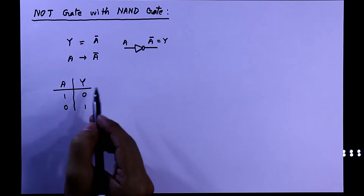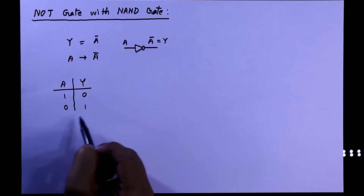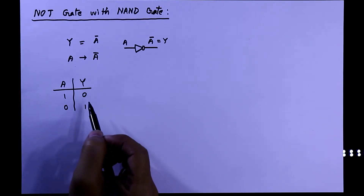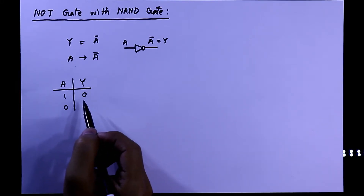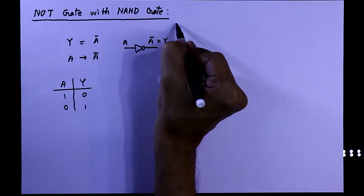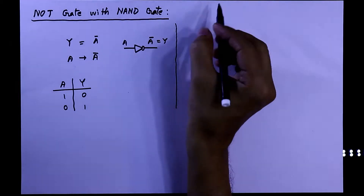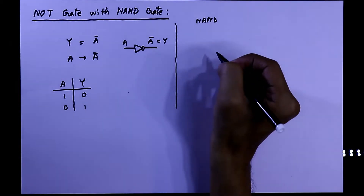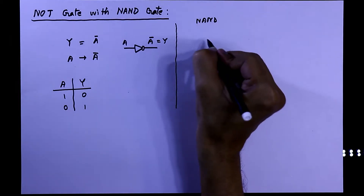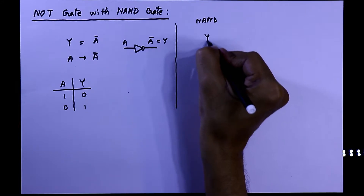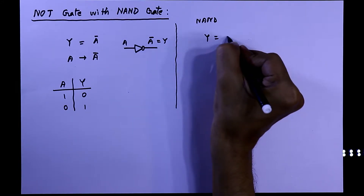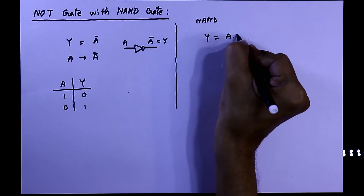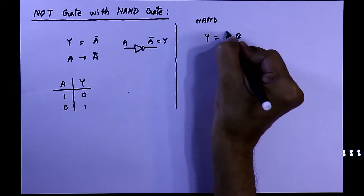Now we have to get this truth table using a NAND gate. The mathematical expression of NAND gate is y equal to a dot b, bar.